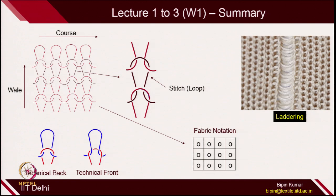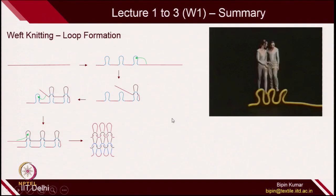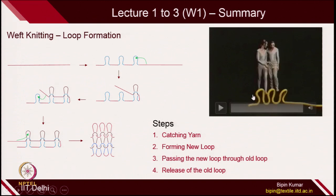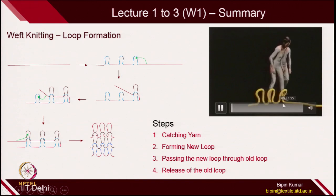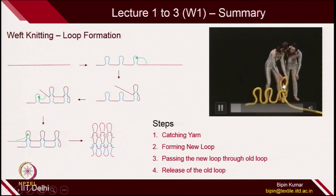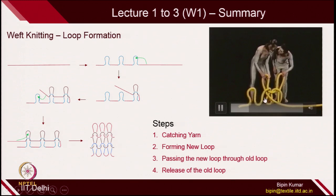The entire loops will just open up if any loop breaks inside the fabric structure, so laddering is one of the key issues in weft knit structures. I also gave you an indication of how we make a knit fabric structure — we start from a single yarn, create loops, and then start making new loops individually and adding them to each of these columns one by one. In the video you can see we first create a series of loops, then catch new yarn, make a new loop, and pass it through the old loop.